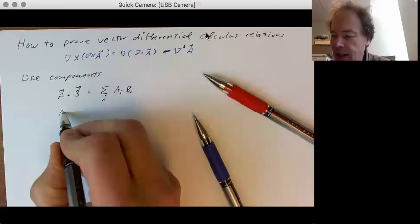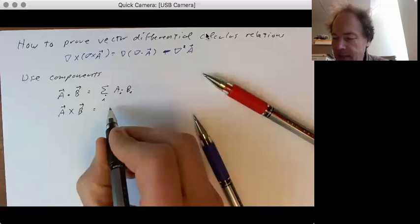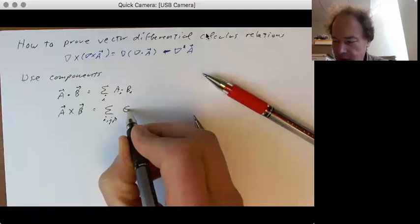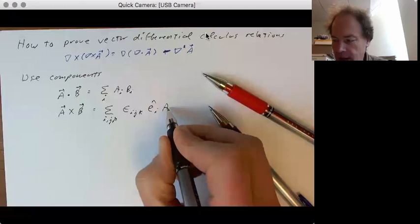Now I try to write a cross b the same way, and it is no longer straightforward or easy. Instead, we have to define something, and we're now summing over three things of epsilon i, j, k, which I'll define in a minute, times e at i, a sub j, b sub k.